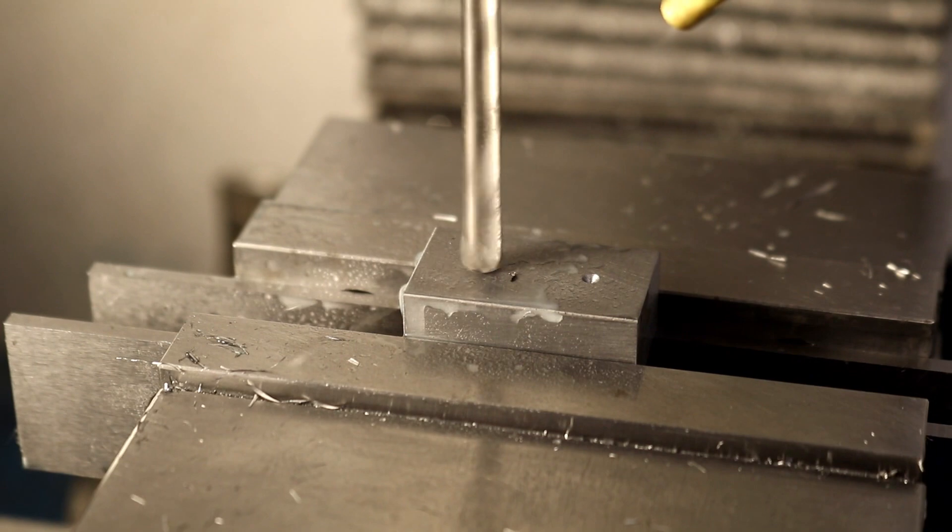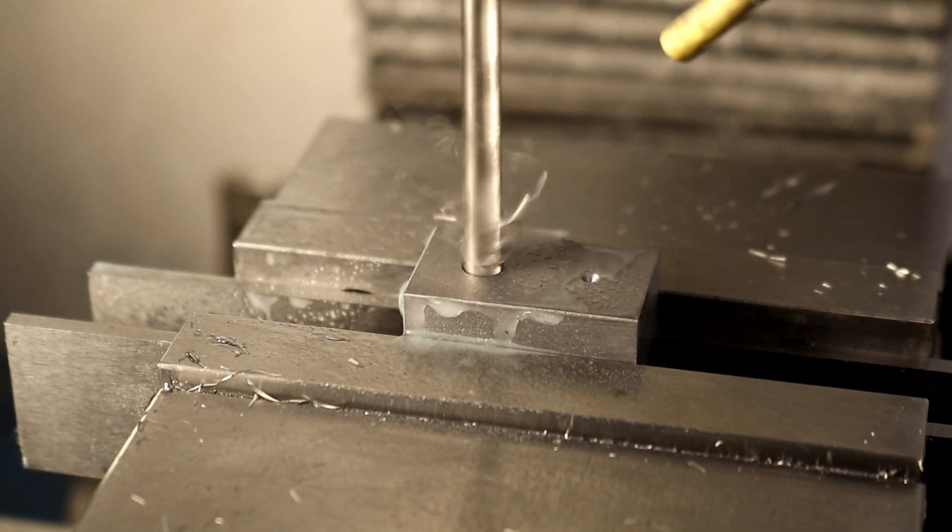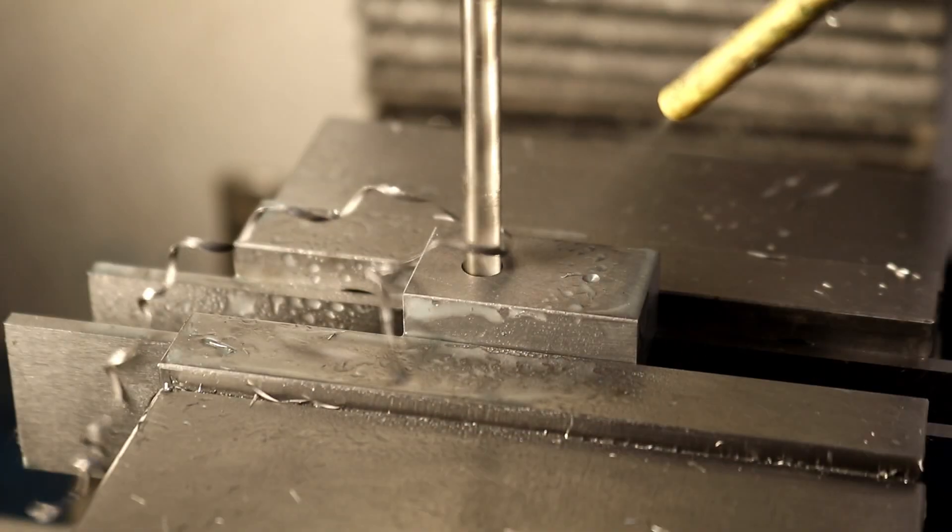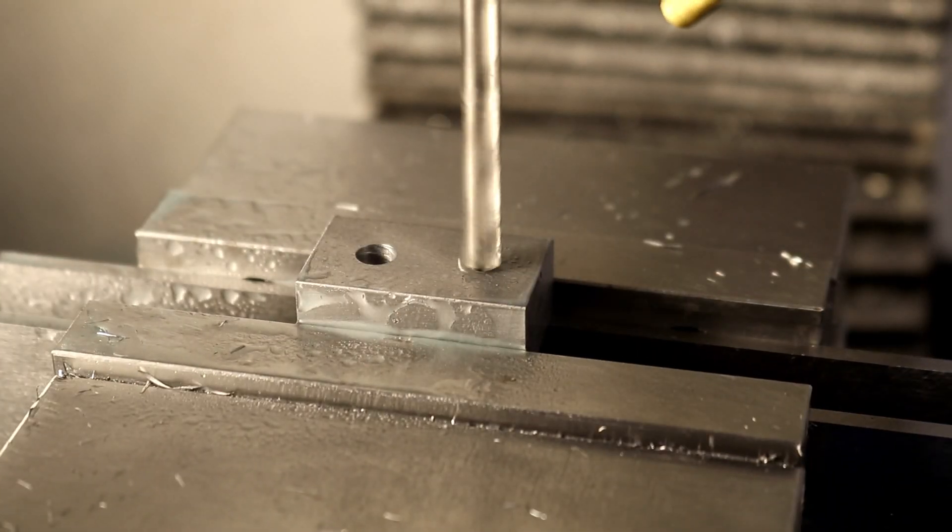Now I'm working on the y and z targets, and it's fun to show the difference between using coolant and not using coolant. It's all the same parameters, and other than a lot of heat, there's also a difference in how the chips form.